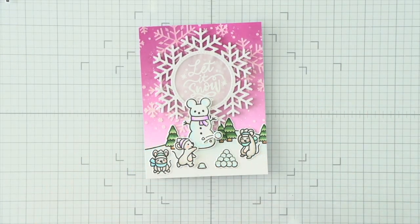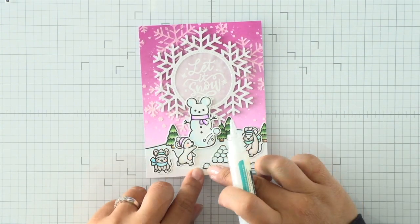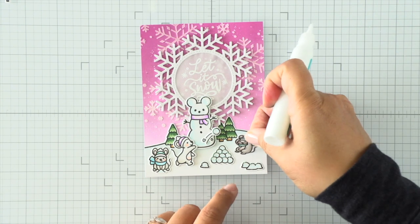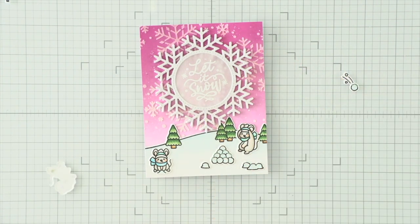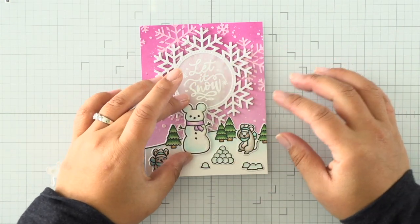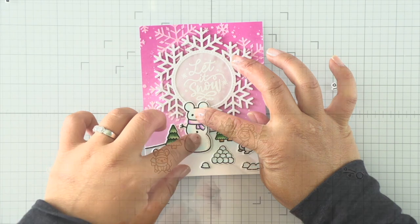I'm seeing what I can and cannot use since I have extra images that I colored. When I'm happy with my scene I'll adhere everything down. First I'm using liquid adhesive to adhere the things that are further back in the scene. For the snow mouse and the mouse in front I'm using some foam and liquid adhesive.